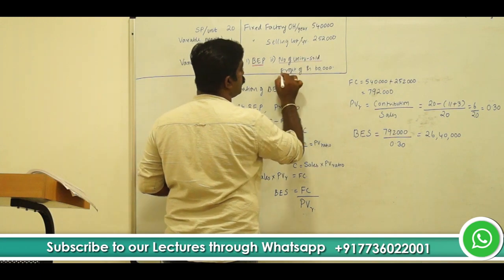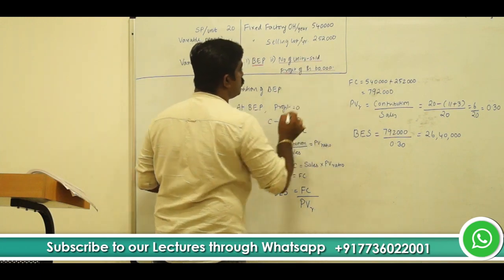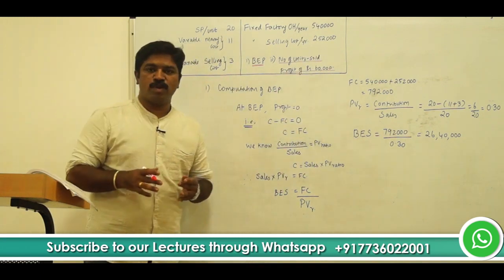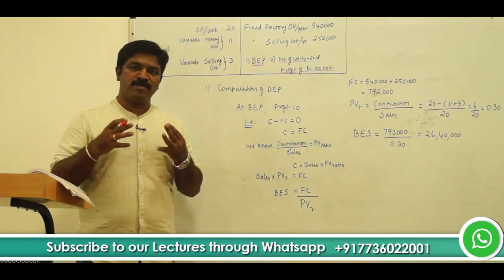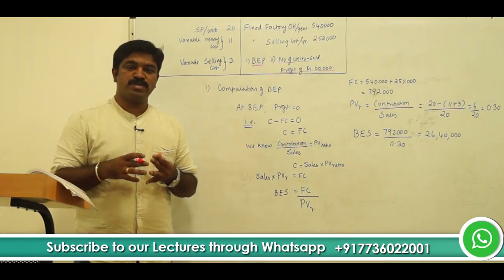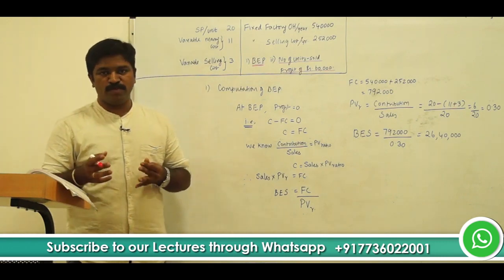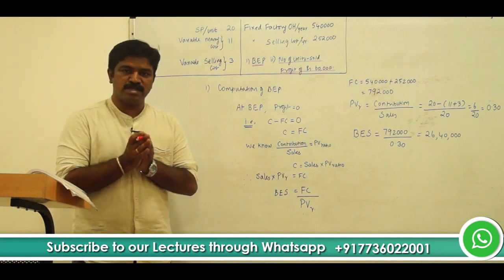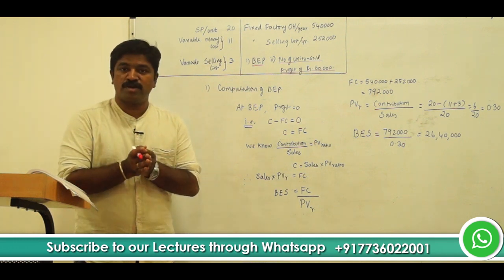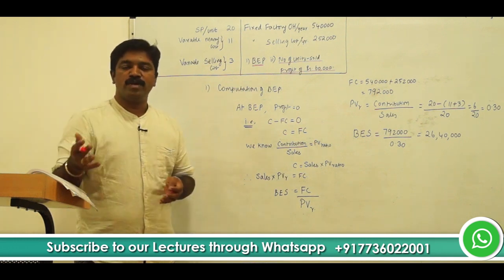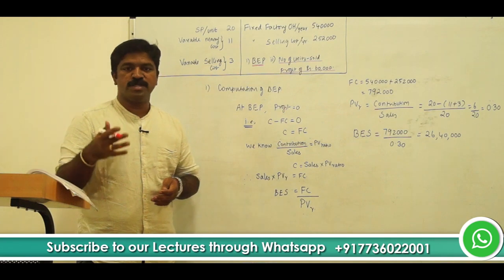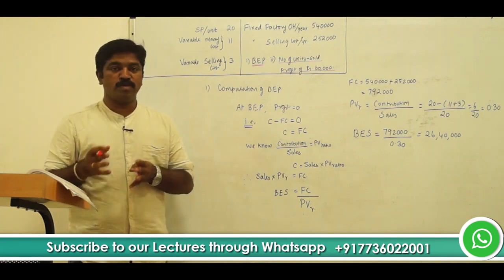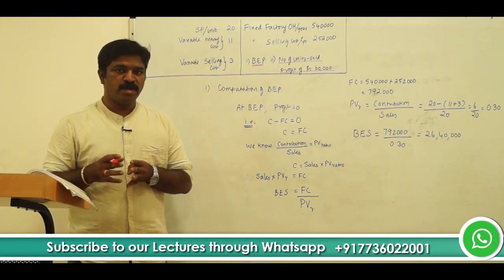Question 2: the number of units that should be sold to make a profit of 60,000. First, what is break-even point? It is the level of sales at which you don't make any profit and you don't suffer any loss. It means that is the level at which your contribution is going to be equal to fixed cost, and that is the reason you are not going to make any profit or suffer any loss.